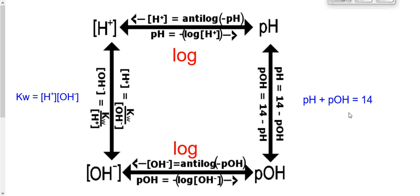If I add my pH and my pOH I always get 14. So as long as I have one of these, I can get to the other by subtracting from 14. Keep this square handy as we solve problems involving pH, pOH, concentration of H+, and concentration of OH-.